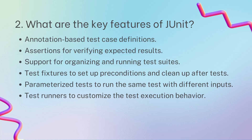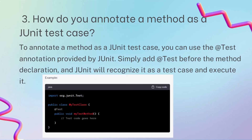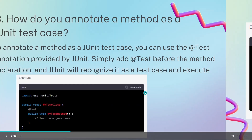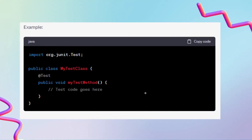How do you annotate a method as a JUnit test case? You write @Test before the method and JUnit will recognize it as a test. You can see an example on screen.